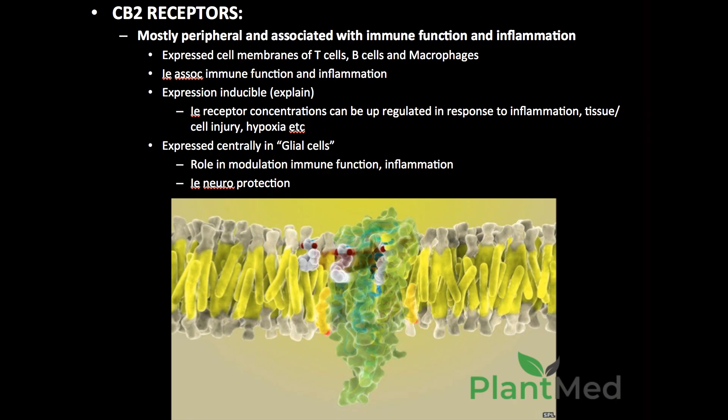CB2 receptors are mostly peripheral and, as mentioned, are associated with immune function and inflammation. They're expressed on all of our white blood cells — T-cells, B-cells, and macrophages — and are associated with decreasing the inflammatory response in a healthy functioning endocannabinoid system.